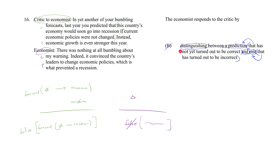B is wrong for this question, but B will be the right answer choice in a different question, because an economist could argue that way. If your opponent conflated a prediction that hasn't yet turned out to be correct with one that has turned out to be incorrect, that's a point of weakness you can exploit by calling them out — it just doesn't happen here.